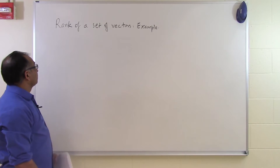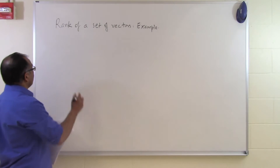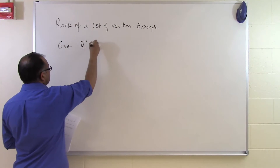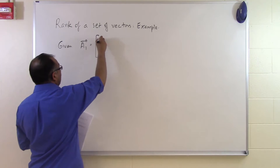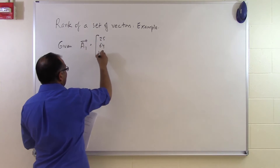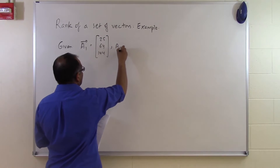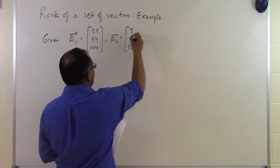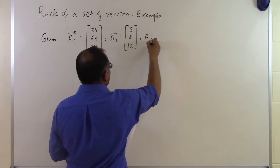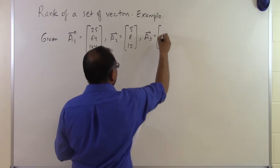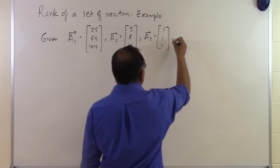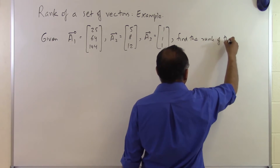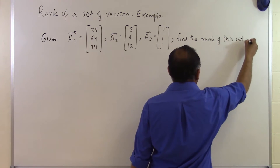In this segment, we'll look at an example of how to find the rank of a set of vectors. So let's suppose somebody says, given these three vectors: a1 is equal to [25, 64, 144], a2 is equal to [5, 8, 12], and a3 is given as [1, 1, 1]. Find the rank of this set of vectors.